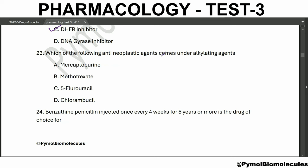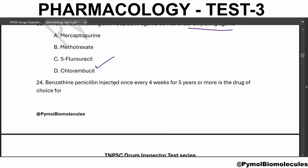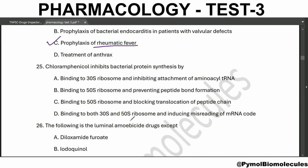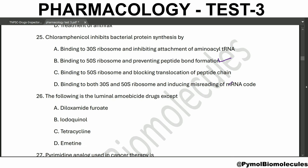Which of the following is an antineoplastic agent under alkylating agents? That is chlorambucil. Benzathine penicillin is injected once every four weeks for five years - that is the drug of choice for prophylaxis of rheumatic fever. Chloramphenicol inhibits bacterial protein synthesis by binding to the 50S ribosome and preventing peptide bond formation.